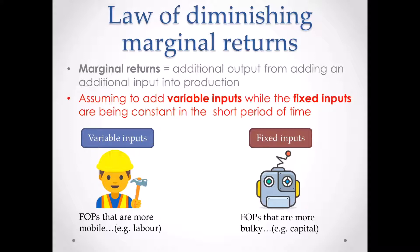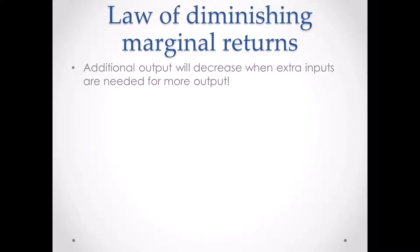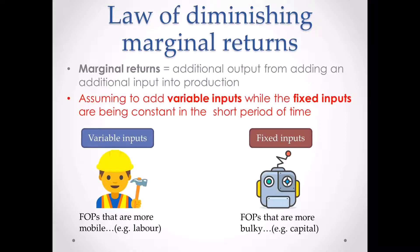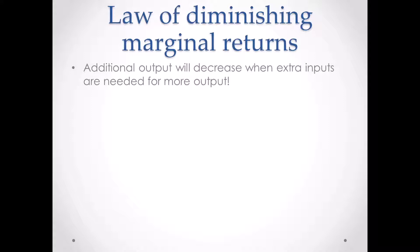Even though I'm just repeating things that we have done during induction, it's good to know. Marginal returns only happen when we recruit more inputs, because when we have more resources they can help us produce more output. But because of that assumption, you will see the additional output will decrease — the amount of additional output will decrease when extra inputs are needed for more output.